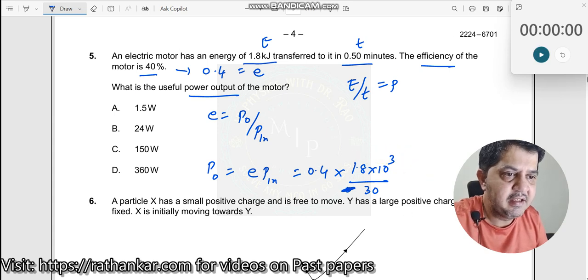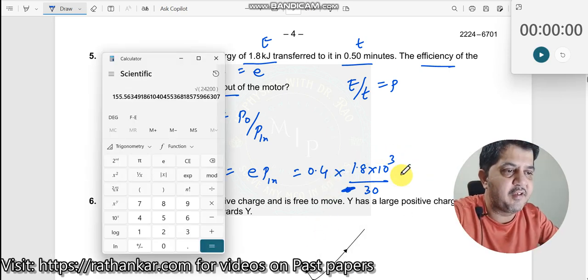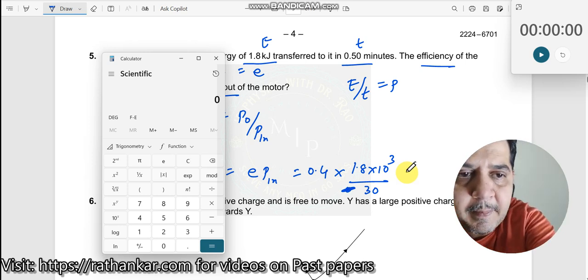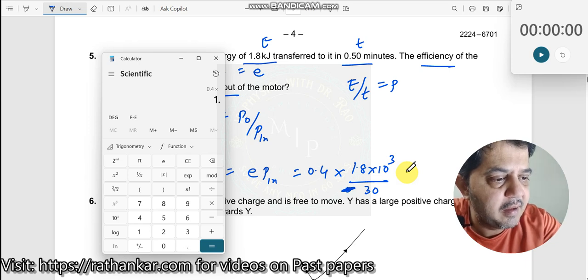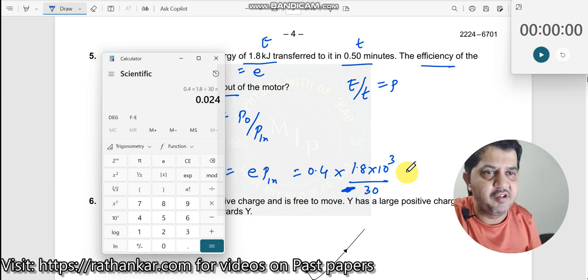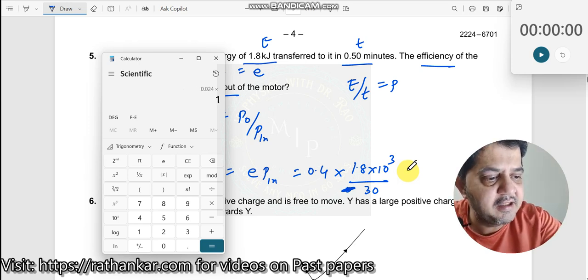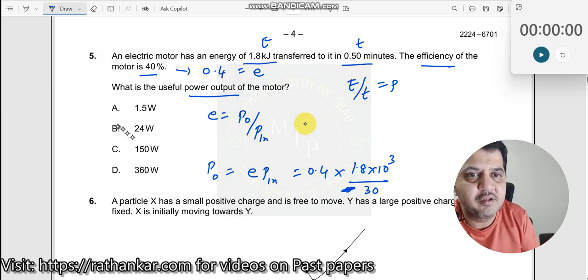Use my calculator. Let me find it out which is 0.4 multiplied by 1.8 divided by 30 seconds is equal to 0.024. Multiply this by 1000, I get this as 24. What is this 24 unit? 24 Watt. So answer is B over here.